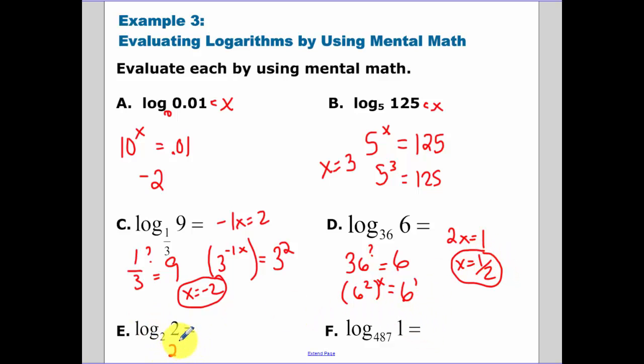2 to what power gets me back 2? That's the value of 1. 487 to what power gets me back 1? The only time that you get 1 out of an exponential is if you have the power of 0. So that last one equals 0.